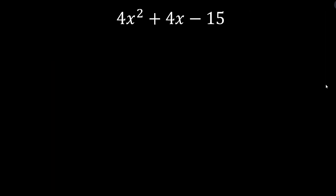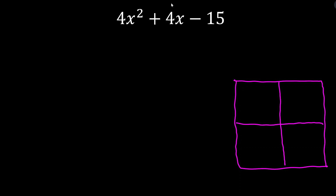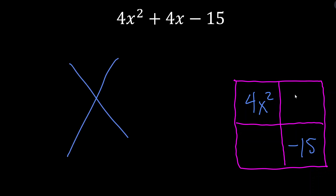Let's try our next example. One thing I forgot to mention: we should always check for a GCF before applying this method — is there any number or variable we can factor out to make our life easier? In this case, no: 4 and 15 do not share a common factor. So we go ahead and apply the Xbox method. A times c is 4 times negative 15, which is negative 60. We're looking for numbers that multiply to negative 60 but add to 4.